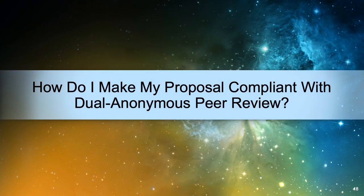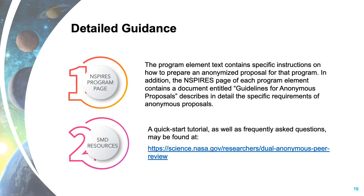How does the proposing community make their proposals compliant with dual anonymous peer review? NASA has provided very detailed guidance for this major change. Every single program element performed under dual anonymous has very specific program-level guidance, and the NSPIRES page for each element contains a document called the Guidelines for Anonymous Proposals, which describes in detail the specific requirements. SMD also has a quick-start tutorial and frequently asked questions available at the provided URL.